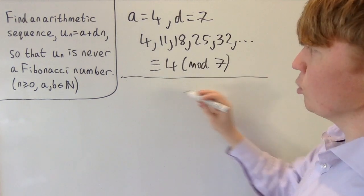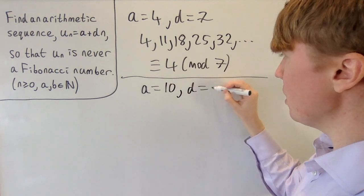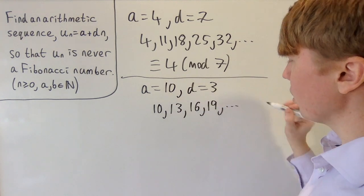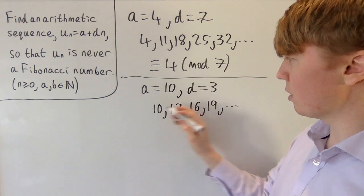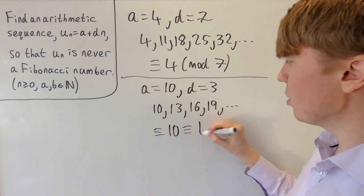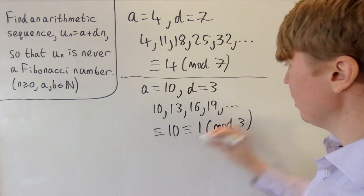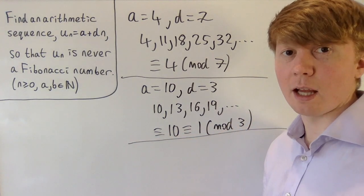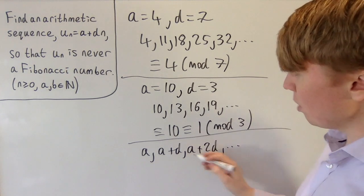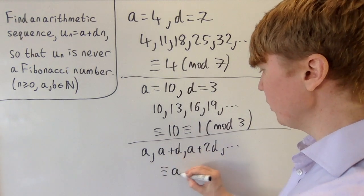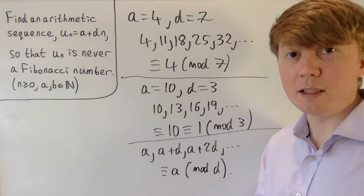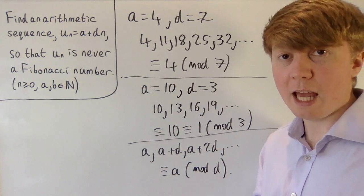Looking at a different example with a is 10 and d is 3, our sequence would be 10, 13, 16, 19, and so on. These are all equivalent to 1 modulo 3. In general, our sequence begins with a and goes up by d, so all terms are equivalent to a modulo d. The problem reduces to finding values of a and d so that the Fibonacci numbers are never equivalent to a modulo d.